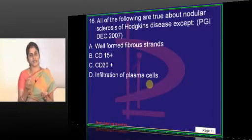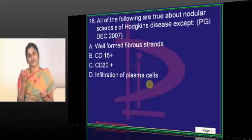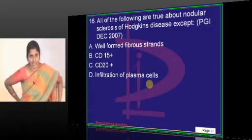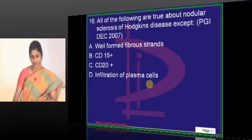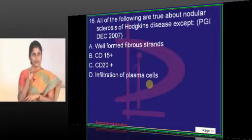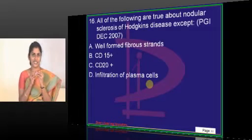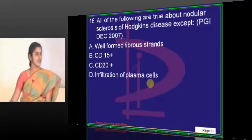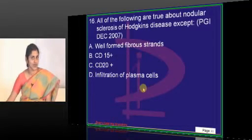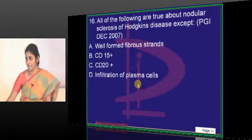By the expression of cytokines, the ligands and the chemotactic substances by the Hodgkin Reed-Sternberg cells. So in Hodgkin lymphoma, the neoplastic cells will be very less; the Reed-Sternberg cells will be very less in number. So you have a reactive background which is composed also of plasma cells.